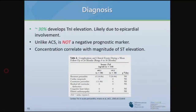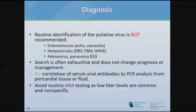Troponin is appropriately obtained in most patients with pericarditis presenting with ST elevations. About 30 percent will have troponin elevation, likely due to extension to the epicardium. This is not like acute coronary syndrome — troponin elevation does not correlate with worse prognosis, and higher troponin level does not mean worse outcomes. A small Italian study looking at patients with versus without troponin elevation found the overall recurrence rate and complication rates were similarly low in both groups.